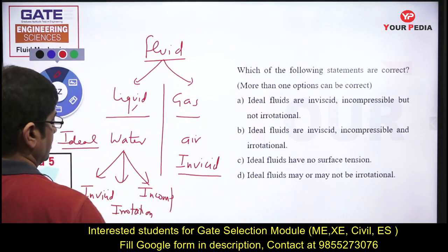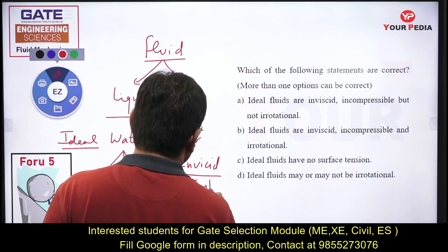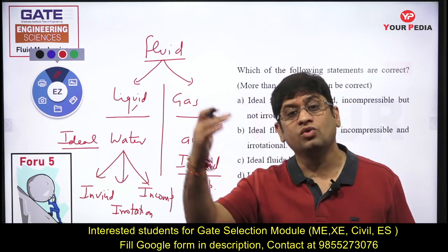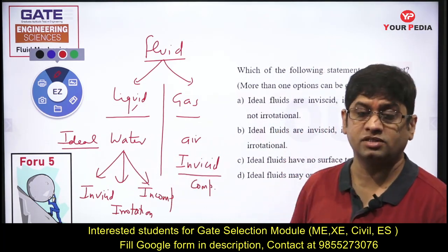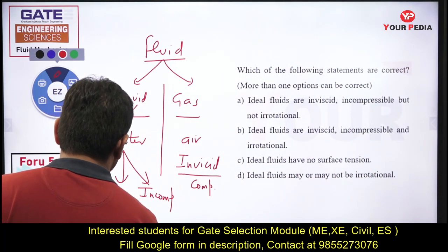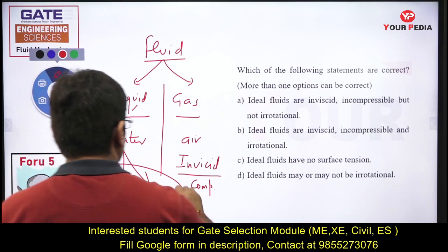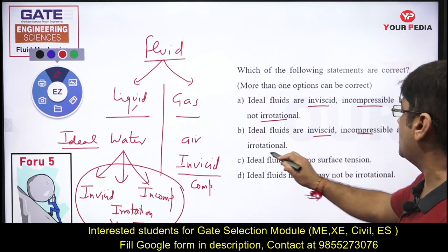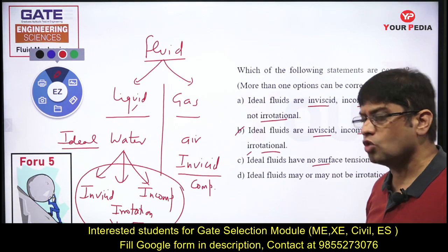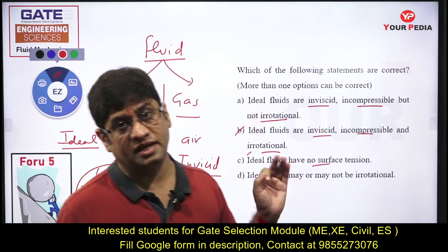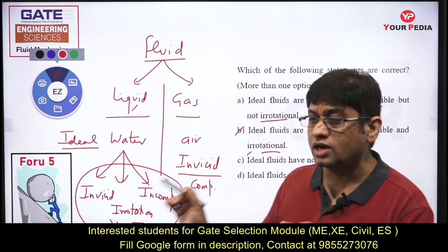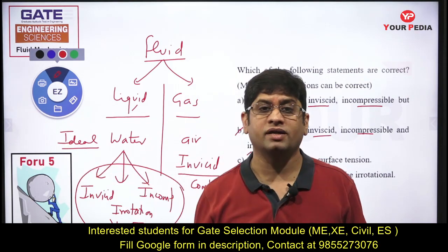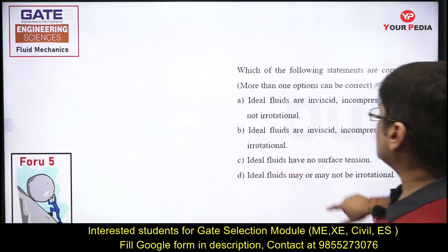The fourth condition for ideal fluid is no surface tension. So the four conditions are: inviscid, irrotational, incompressible, and no surface tension. Remember that fluid includes gas and liquid. For gases, the incompressibility condition is not satisfied since gases are compressible. This combination of four conditions defines an ideal fluid.